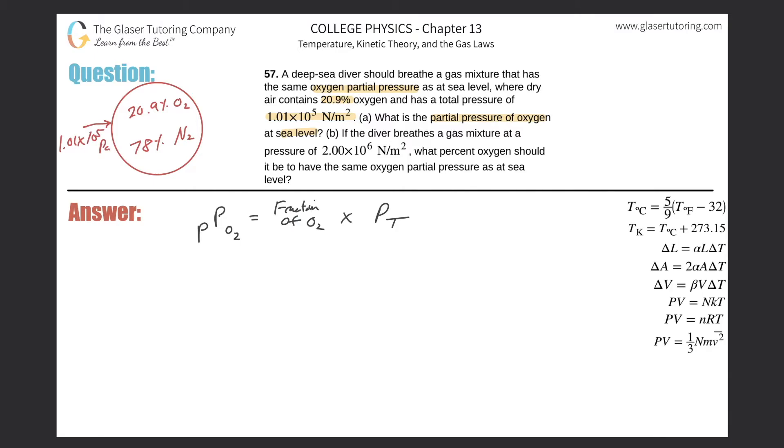What that means is that if I want to find just the pressure attributed by oxygen, all I need to do is basically take 21% or so of the total pressure. If I wanted to find nitrogen, I would just take 78% of the total pressure. That's exactly what this formula over here is telling you.